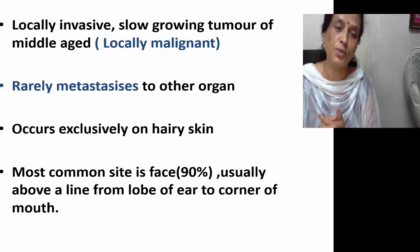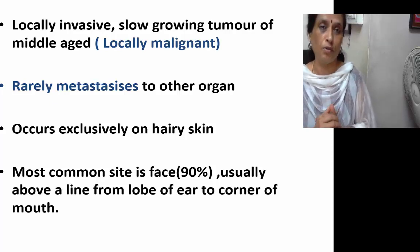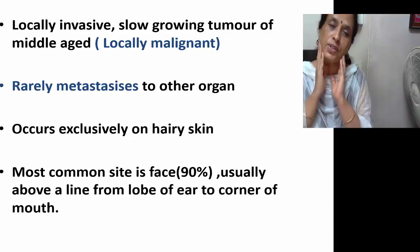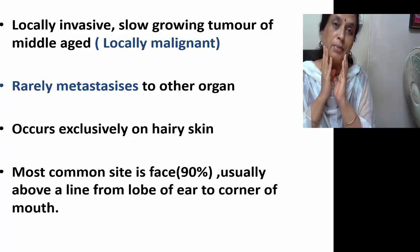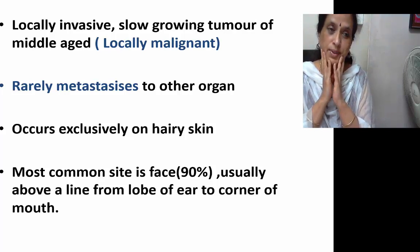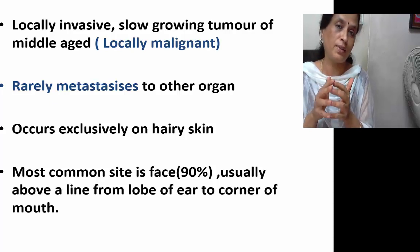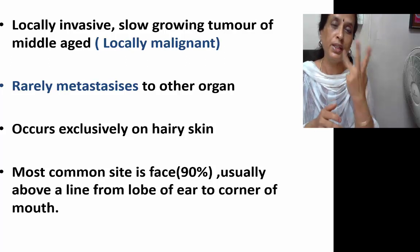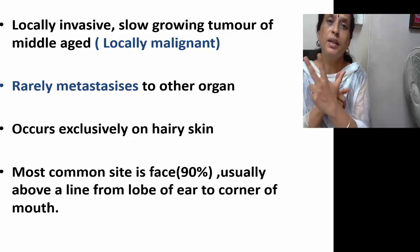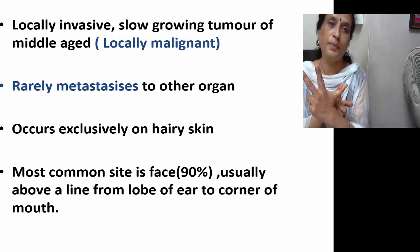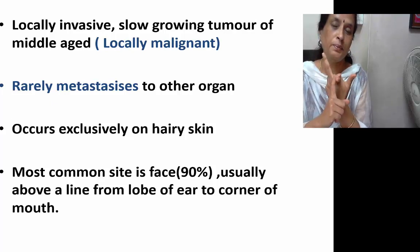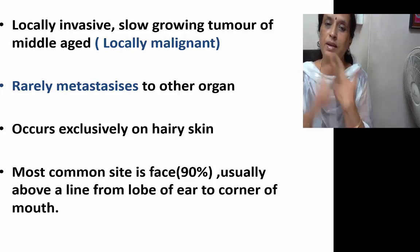When we talk about locally malignant tumors, what are the other tumors you know of? Another tumor which affects the jaws is ameloblastoma. Another tumor which looks like squamous cell carcinoma is verrucous carcinoma. So three tumors which are locally malignant: basal cell carcinoma, ameloblastoma, and verrucous carcinoma.